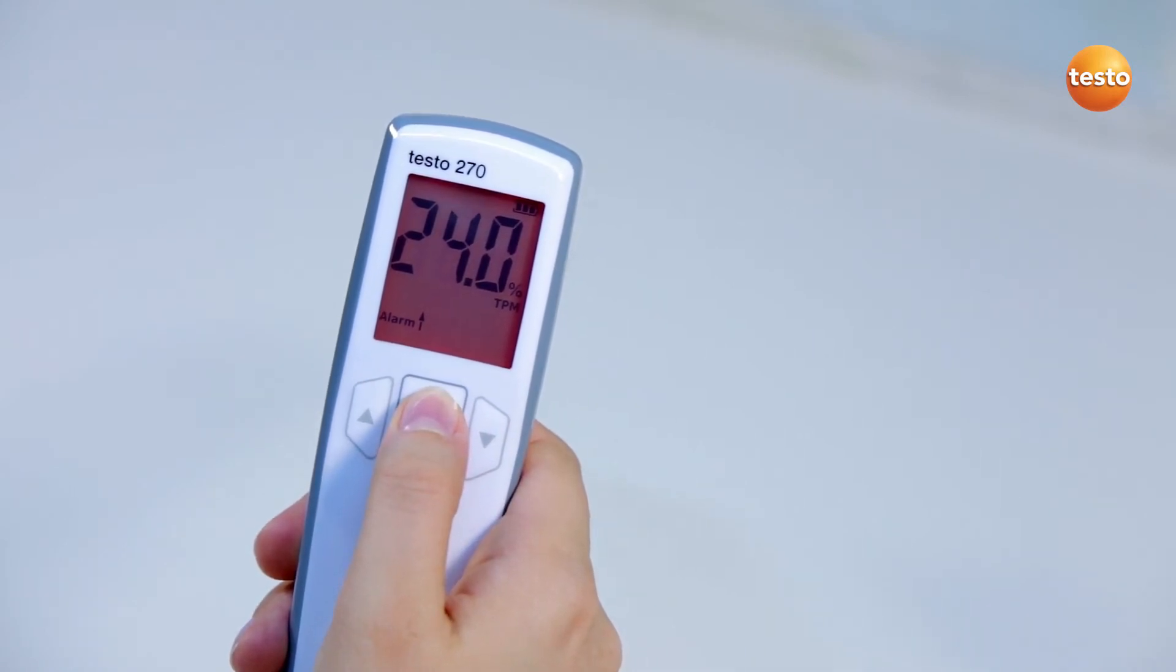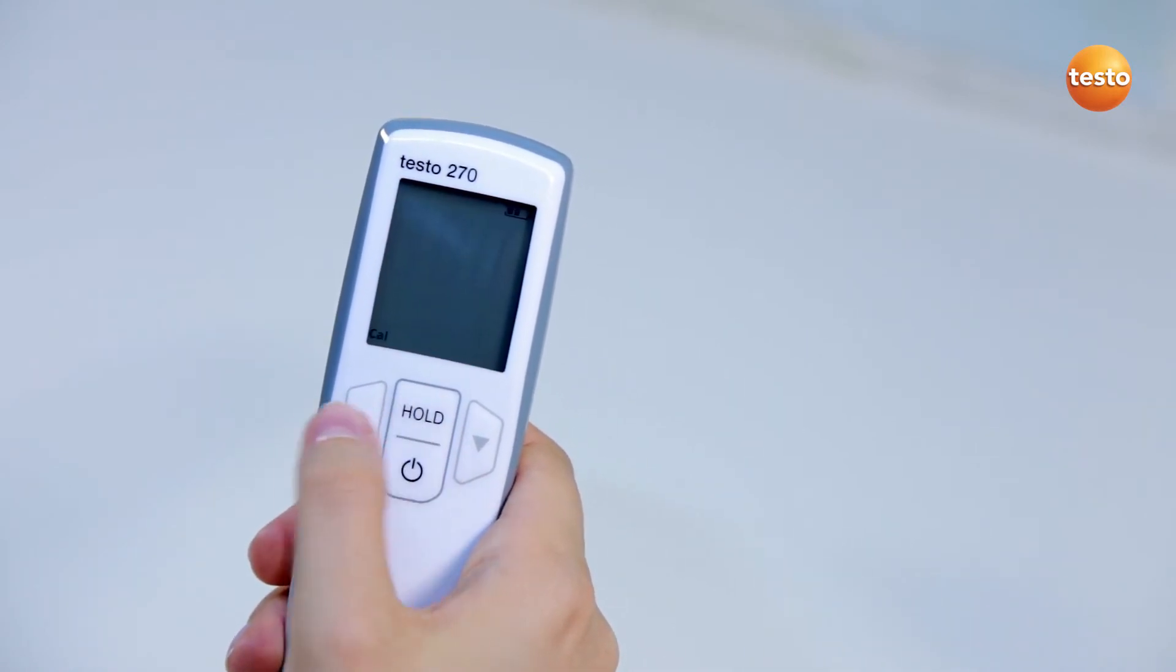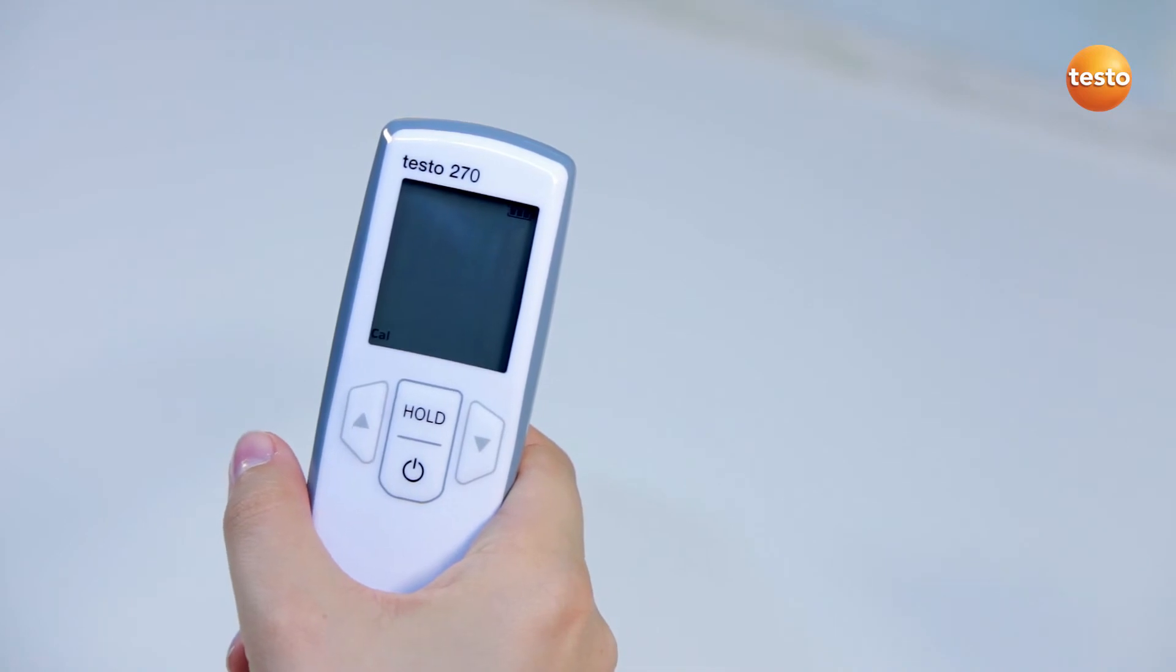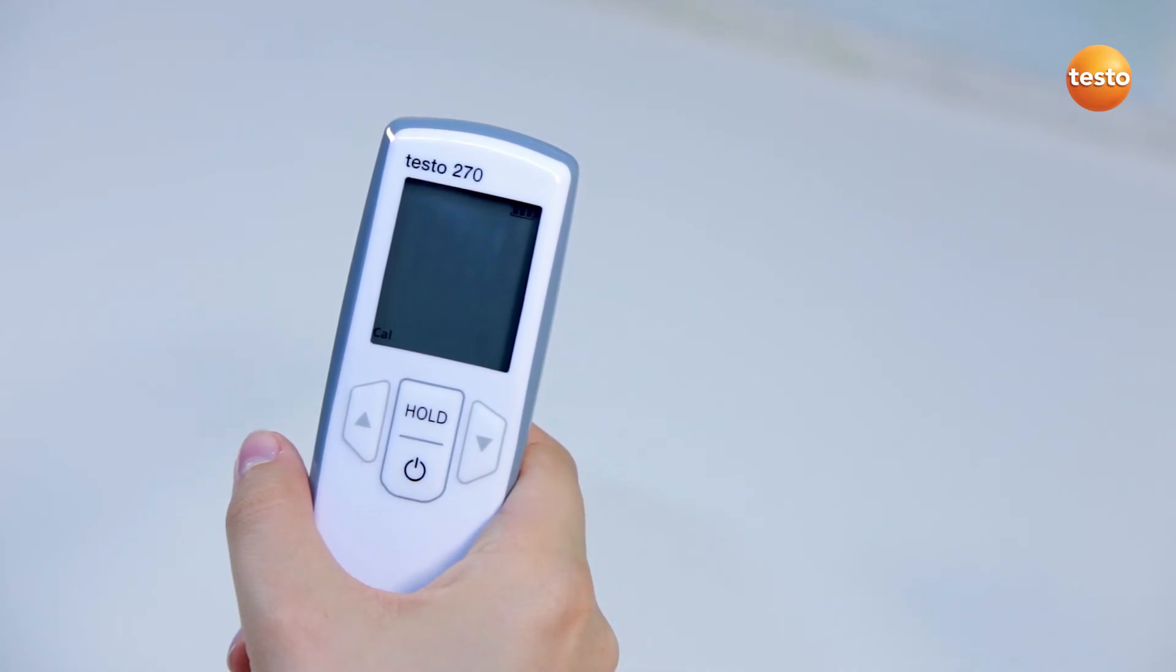To save the adjustments, I confirm with the hold button as before. Only then are the settings for both TPM limit values accepted.